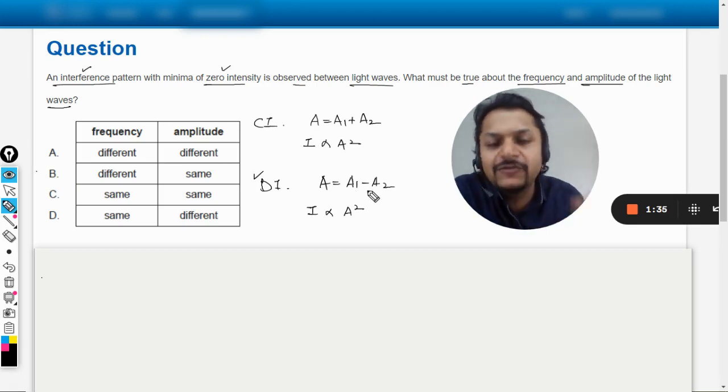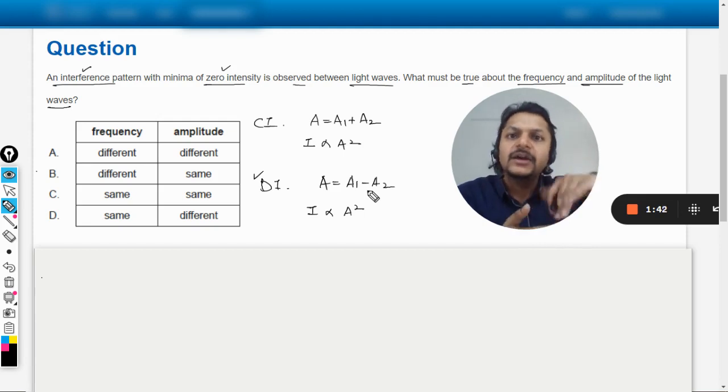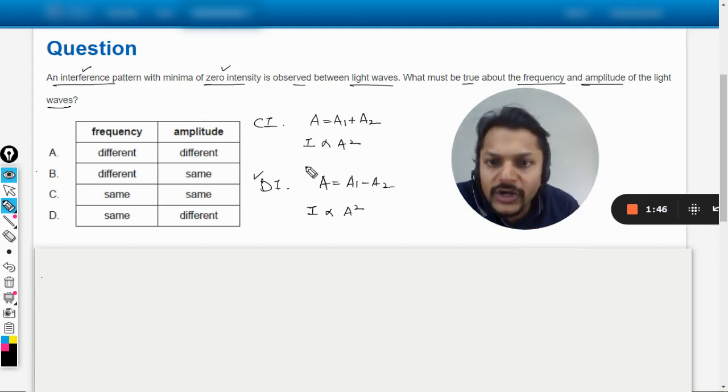Only then that point will be perfect black, because the crest is overlapping the trough and plus A minus A, the resultant is coming out to be zero. So it means for destructive interference, the amplitude should be same.